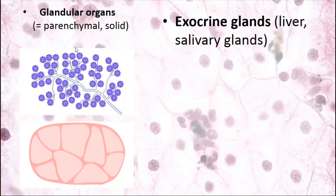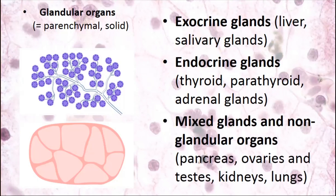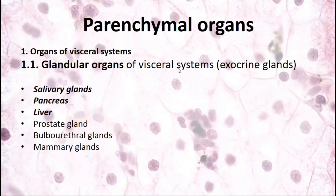Glandular organs include different exocrine glands — including liver and salivary glands, which are completely exocrine. There are also endocrine glands: thyroid, parathyroid, and adrenal glands, which provide endocrine function. Both types of glands provide secretion and are formed by epithelium. Also, glandular organs include mixed glands such as the pancreas, and non-glandular organs with endocrine and non-endocrine functions, such as ovaries, testes, kidneys, and lungs — all of which are parenchymal organs.